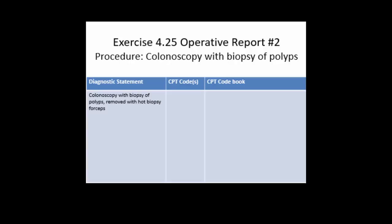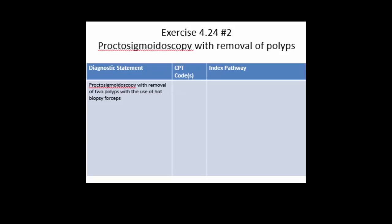Exercise 4-25, operative report number two: a colonoscopy with a biopsy of polyps removed with hot biopsy forceps. The answer would be colonoscopy, flexible, removal of polyp. Another example, 4-24 number two: a proctosigmoidoscopy with removal of polyps. There are two polyps here, so you have to watch — one code says single polyp and another says multiple polyps. Because there were two polyps in the operative report, you would use the code for multiple polyps, which is 45315.